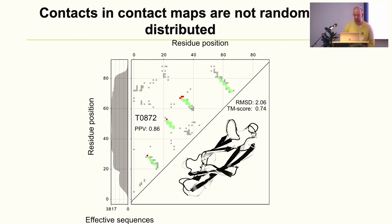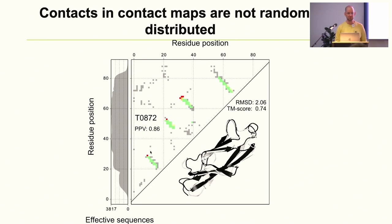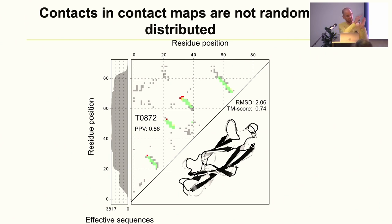You take a protein, look at the contact map where each dot represents a contact between two residues, and use a method to predict it. You can predict quite a lot — though you miss some long-range information. You can also see that these contact patterns are clearly not random: there are diagonals, clusters of contacts close to each other. And patterns are something that machine learning is really good at using — machine learning is good at recognizing patterns.